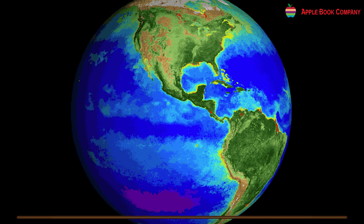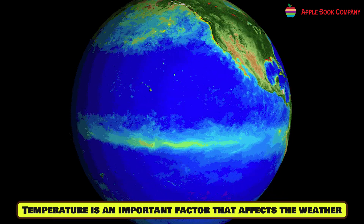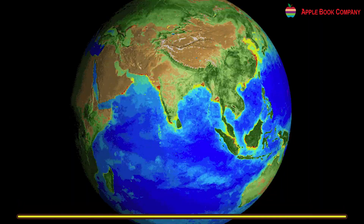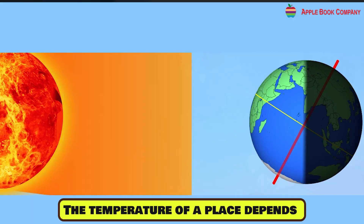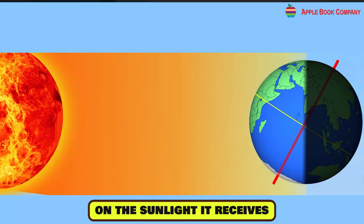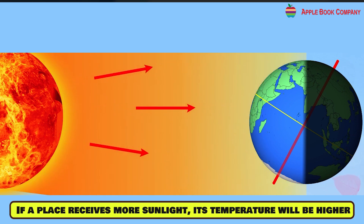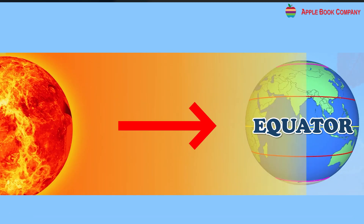Temperature is an important factor that affects the weather. The temperature of a place depends on the sunlight it receives. If the place receives more sunlight, its temperature will be higher. The equator receives direct sunlight, so equatorial regions are very hot.